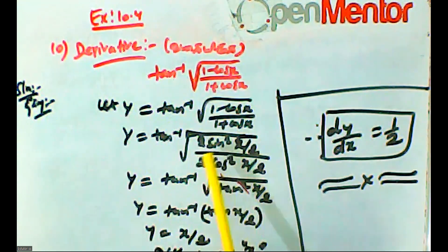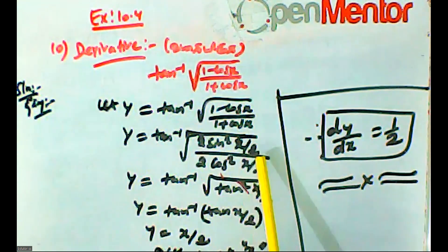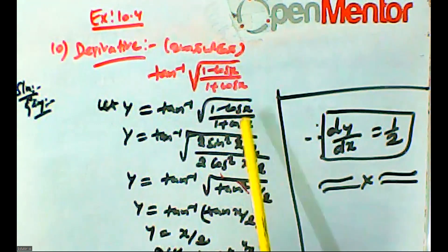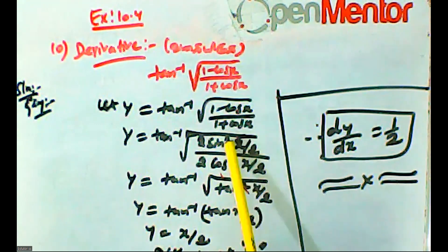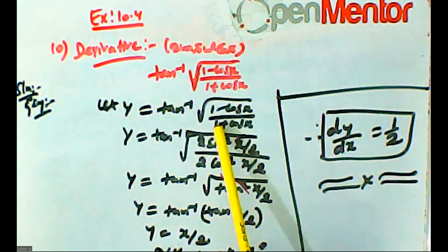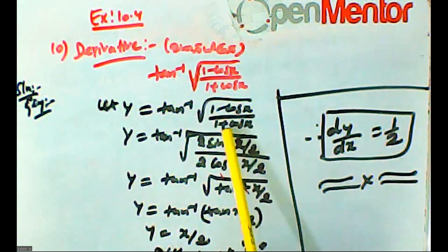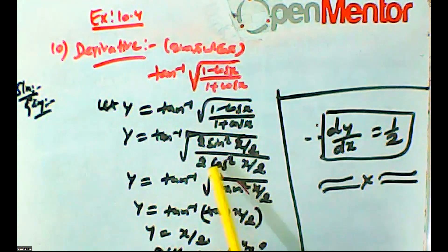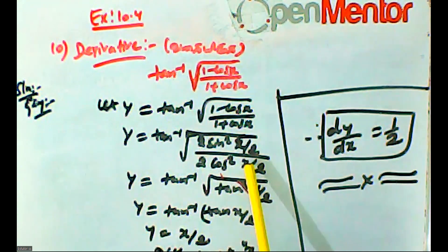There is a sine formula: 1 minus cos x equals 2 sin squared (x by 2). Similarly, 1 plus cos x equals 2 cos squared (x by 2).